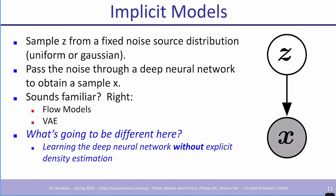In implicit models, we sample Z from a fixed noise source distribution — uniform or Gaussian — and pass that noise through a deep neural network to obtain a sample X. Flow models and VAEs were set up the exact same way. What's different here is that we're going to learn the deep neural network without explicit density estimation — we're not going to maximize the probability of the training data.